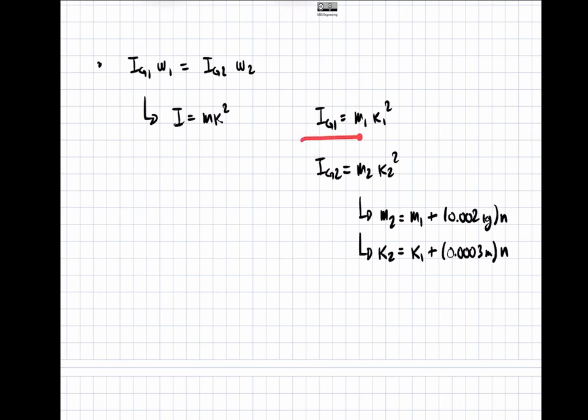And so now we have defined I_G1, and we've also defined I_G2 in terms of m_1, k_1, and the number of paper clips. So we know all those parameters except for the number of paper clips. This is what we're trying to solve.